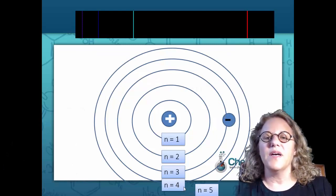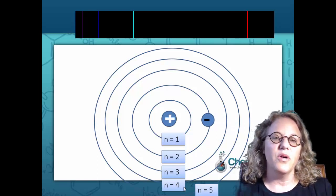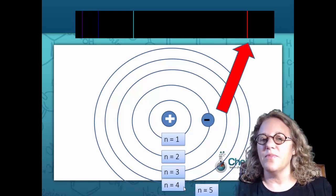He got this theory from the spectrum of the hydrogen atom and he attributed all the transitions back down to lower energy levels as bands on the hydrogen atom spectrum.